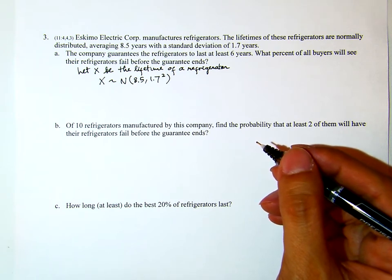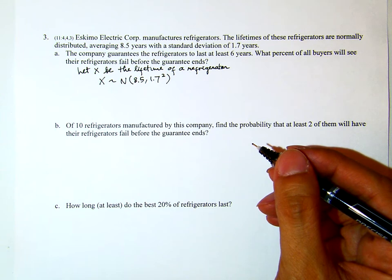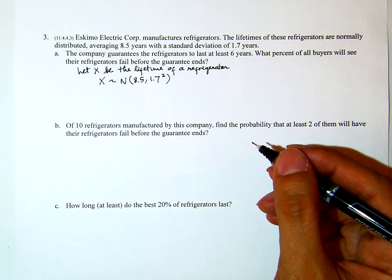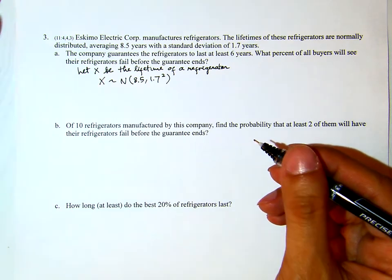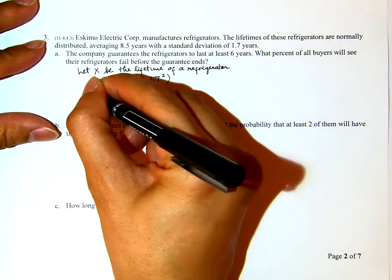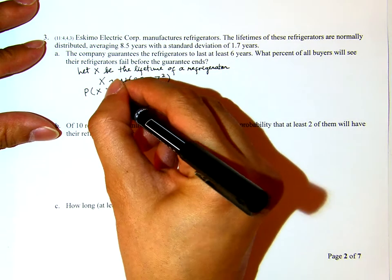Part A: The company guarantees the refrigerators to last at least 6 years. What percent of all buyers will see their refrigerators fail before the guarantee ends? It is guaranteed to last at least 6 years, so the fridge failing before the guarantee ends means the lifetime will be less than 6 years.